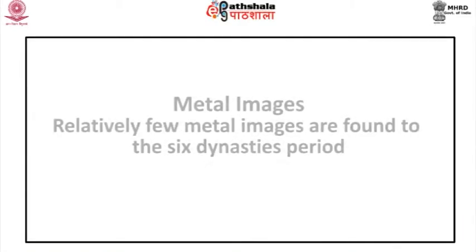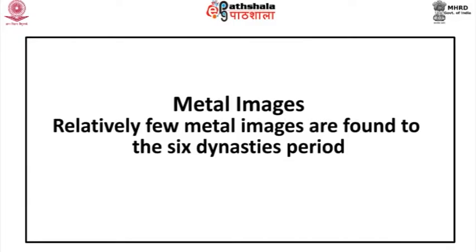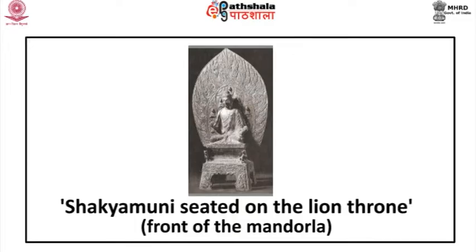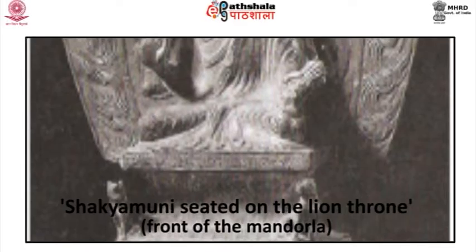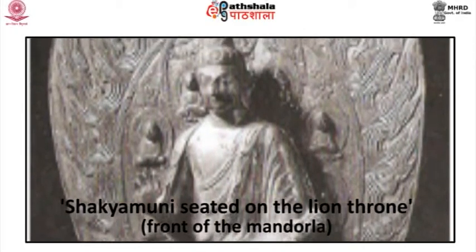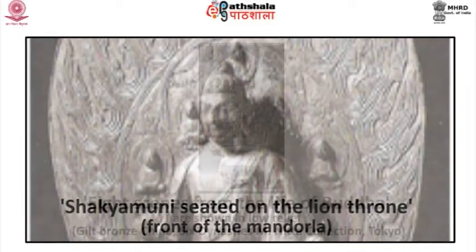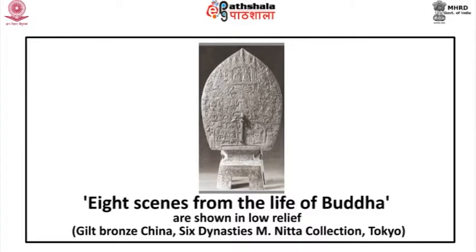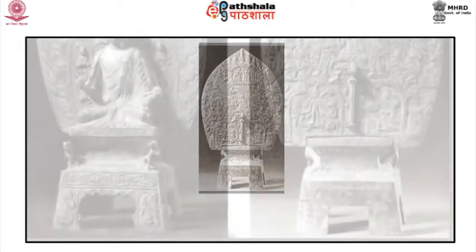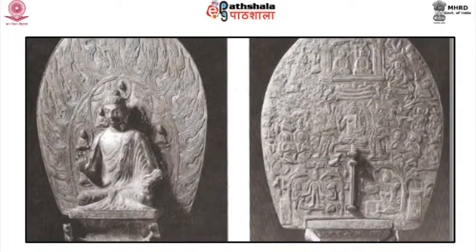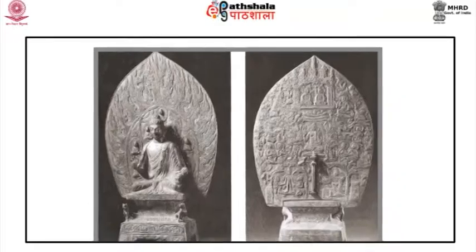The images seem to have been added one after the other with no pre-existing plan, as donor after donor ordered and dedicated a carving. Much of the existing coloring is modern; the original coloring is of similar quality — bright blues, reds, greens, and whites were flatly applied, denying the sculptural form. Relatively few metal images are found from the Six Dynasties period. Shakyamuni seated on the lion throne shows the front of the mandorla with seven Adi Buddhas symmetrically spaced on its inner part, dated to 477 CE.